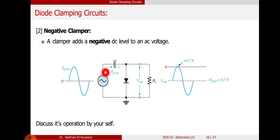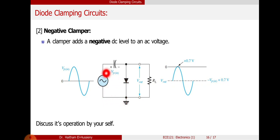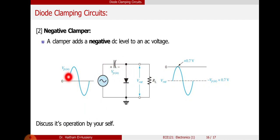During the positive half cycle, the diode will be forward biased. That means current will flow through the diode and the capacitor starts charging. The current is flowing through the electrolytic capacitor, so we are going to charge it.